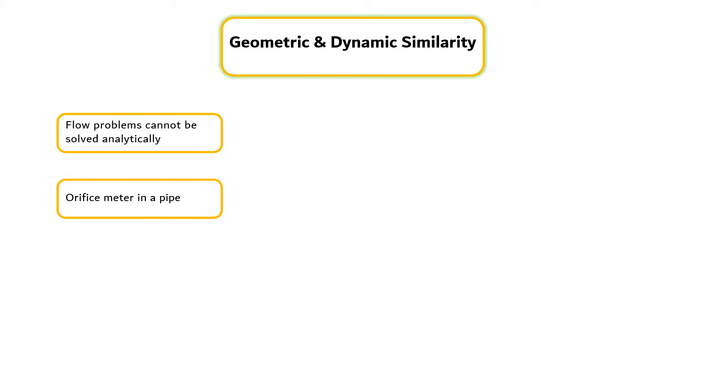Suppose now that we want to scale up or scale down the experimental system in order to build a new one which has exactly the same flow patterns. First of all, we need to have geometric similarity, i.e., the ratios of all dimensions of the pipe and the orifice plates in the original system and in the scaled system must be the same.